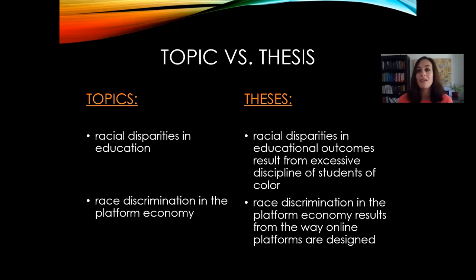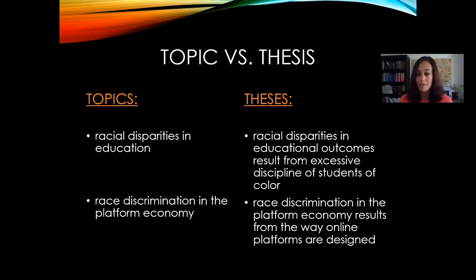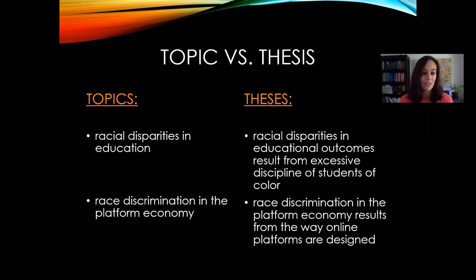Examples of topics would be something like racial disparities in education, or race discrimination in the platform economy. A thesis would be more like: racial disparities in educational outcomes result from excessive discipline of students of color — that's an argument. Or: race discrimination in the platform economy results through the way online platforms are designed — again, that's an argument. This distinction between a topic and a thesis is very important.